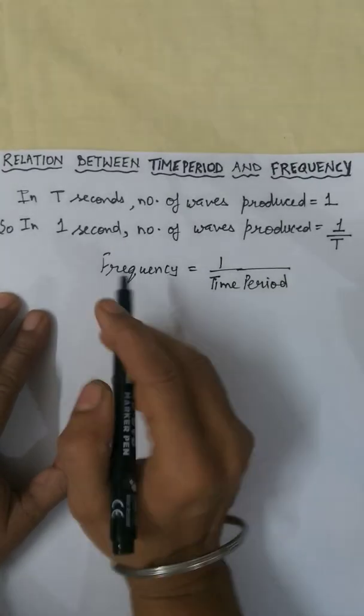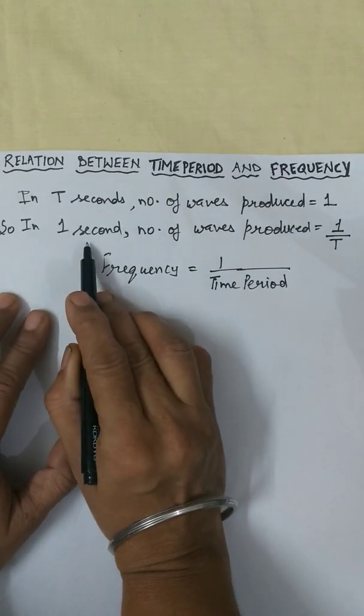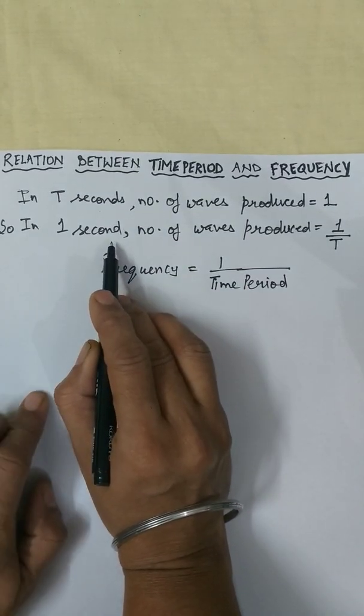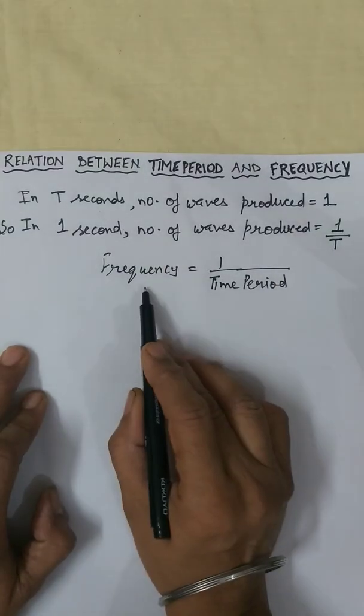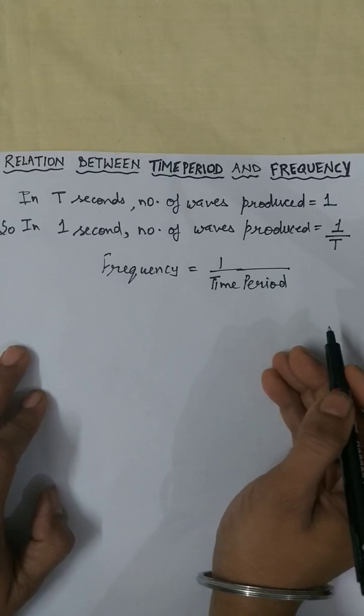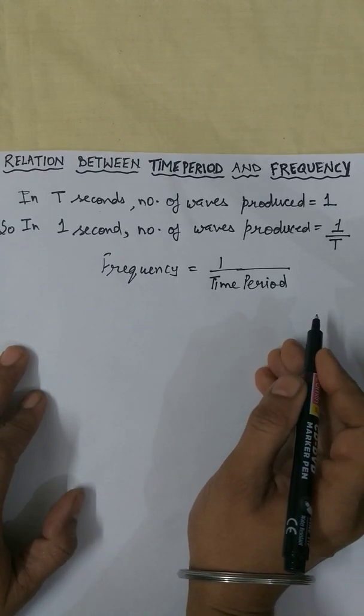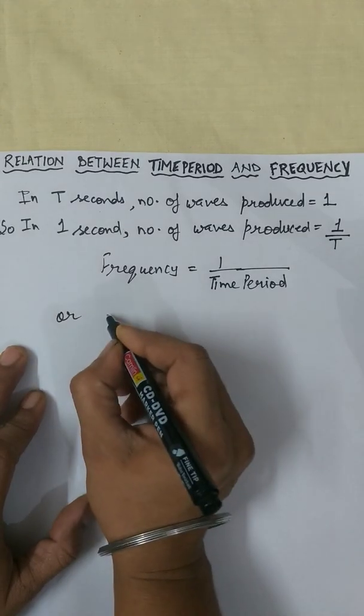I am repeating again. As we know that number of waves produced in one second is equal to its frequency. So we can take frequency instead of this sentence. Frequency is equal to 1 upon time period. That is the relation between time period and frequency of a wave. Same thing we can write in this form.